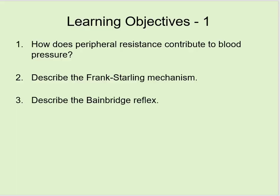This is lecture number one in our blood vessels and blood pressure series. Our learning objectives are to talk about peripheral resistance and how that contributes to blood pressure, and we want to look at the Frank-Starling mechanism and the Bainbridge reflex.